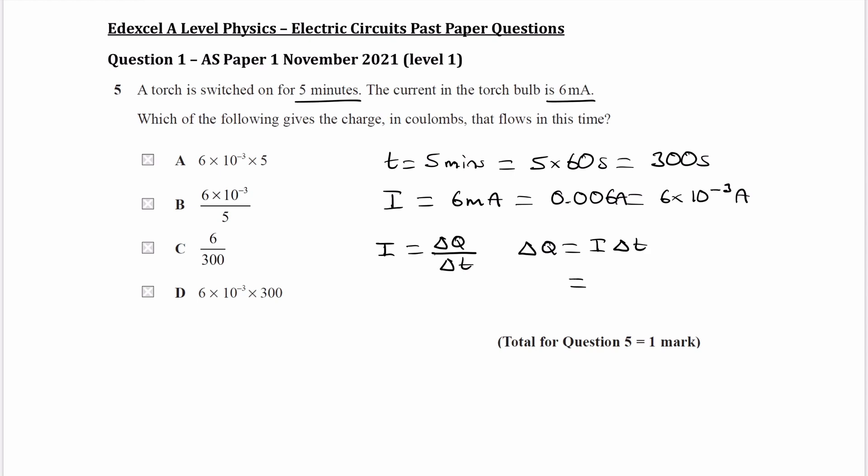And then we end up with the current multiplied by the time. And that is in coulombs, which is option D.